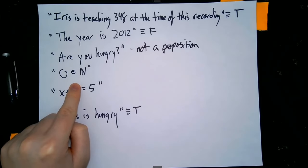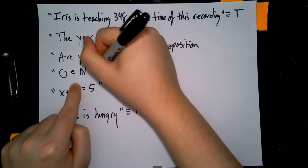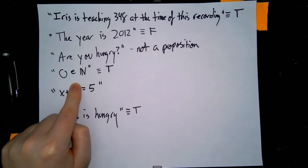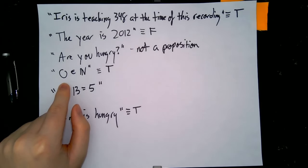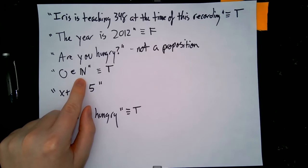"Zero is an element of the natural numbers." If you go back to the numbers video, I actually described that the natural numbers by definition do include zero, so this is a true statement. This is an example of the truth value being completely contained within the statement. We are given all the information we need to know about whether the statement is true or false just by asking ourselves, well, do we know that zero is in fact a natural number? Yes, we do. So we can verify that this is true.